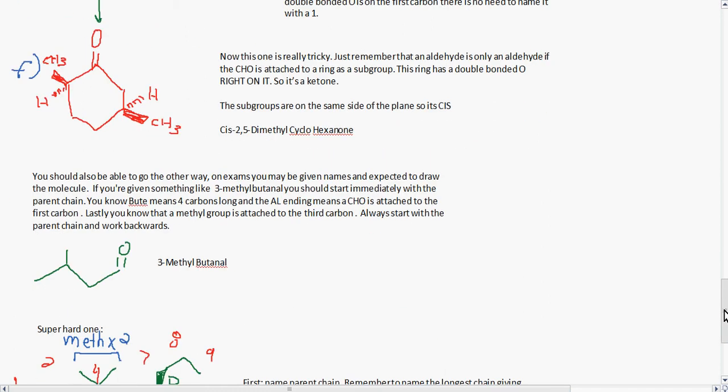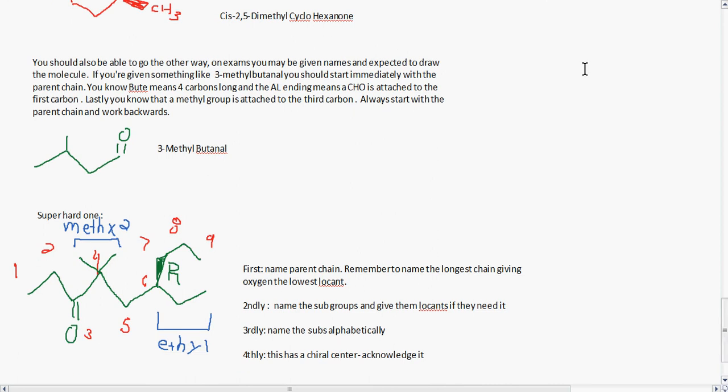You should also be able to go the other way. On exams you may be given names and expected to draw the molecule. If you're given something like 3-methylbutanal, you should start immediately with the parent chain. You know that bute means 4 carbons long, and al ending means that a CHO is attached to the first carbon. Lastly, you know that a methyl group is attached to the third carbon. Always start with the parent chain and work backwards.